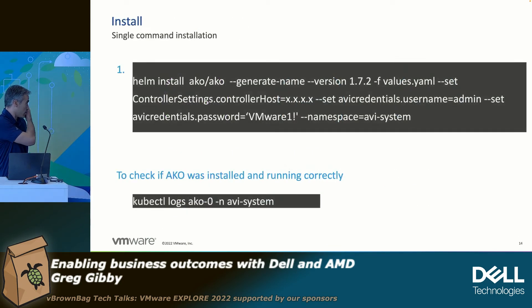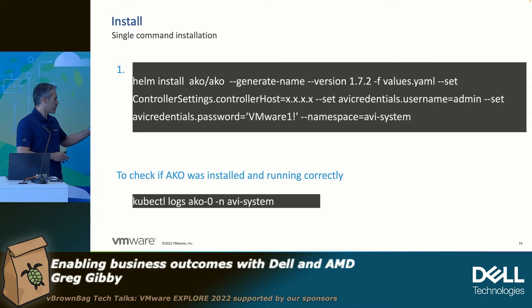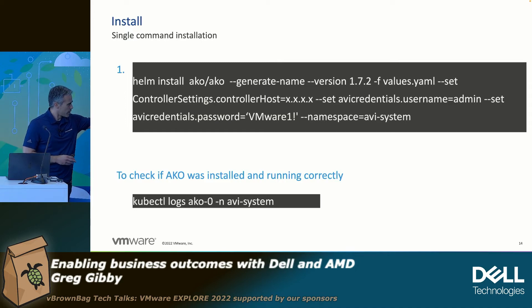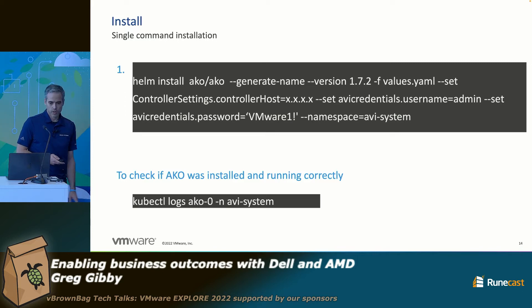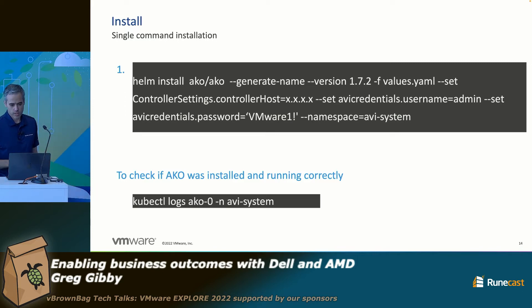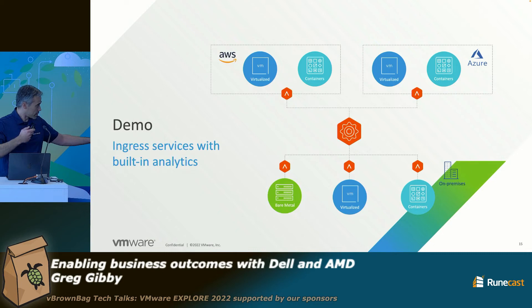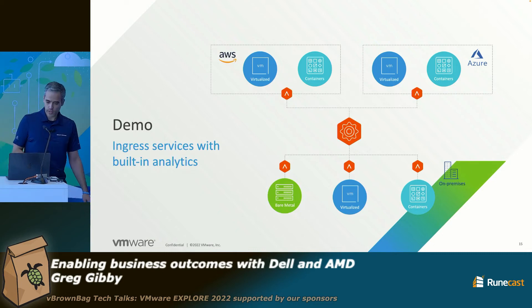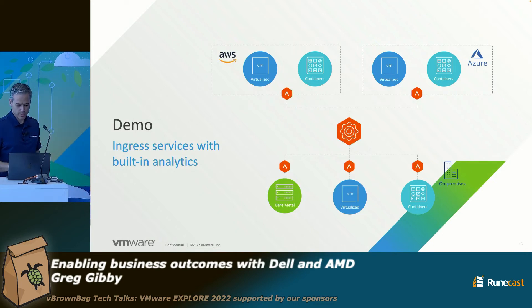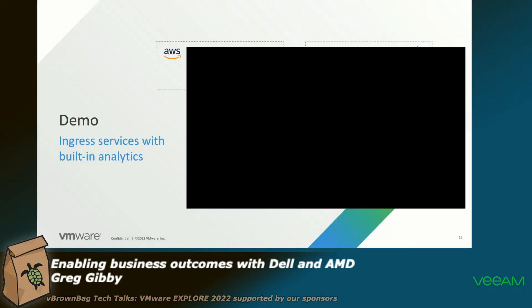After you create your values.yaml file, just do a Helm install with your values.yaml file, verify it ran okay, and you're all set. This is a quick demo video just to see it working.